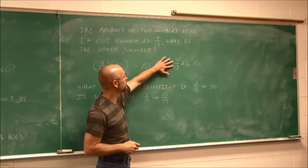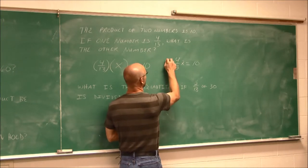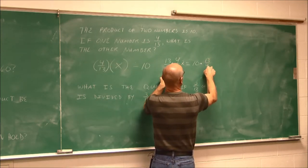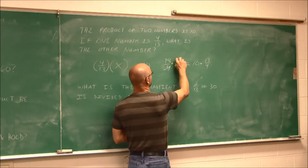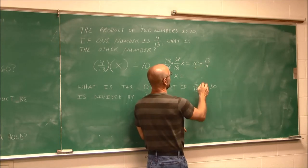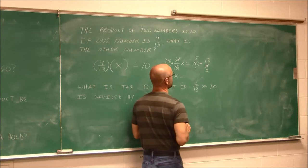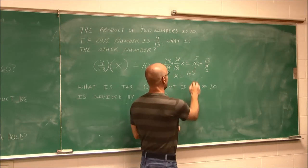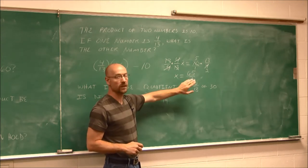Our goal is to get x all by itself. I can multiply by the reciprocal of 4 thirteenths to make this 1x, but what I do to one side of the equation I have to do to the other. A 13 on top reduces the 13 on the bottom to 1, and the 4 on the bottom reduces the 4 on top to 1, leaving 1x. Then 10 over 1 times 13 fourths: 10 and 4 have a common factor of 2, so this reduces to 5 halves. 5 times 13 is 65, and 1 times 2 is 2. So x equals 65 halves.